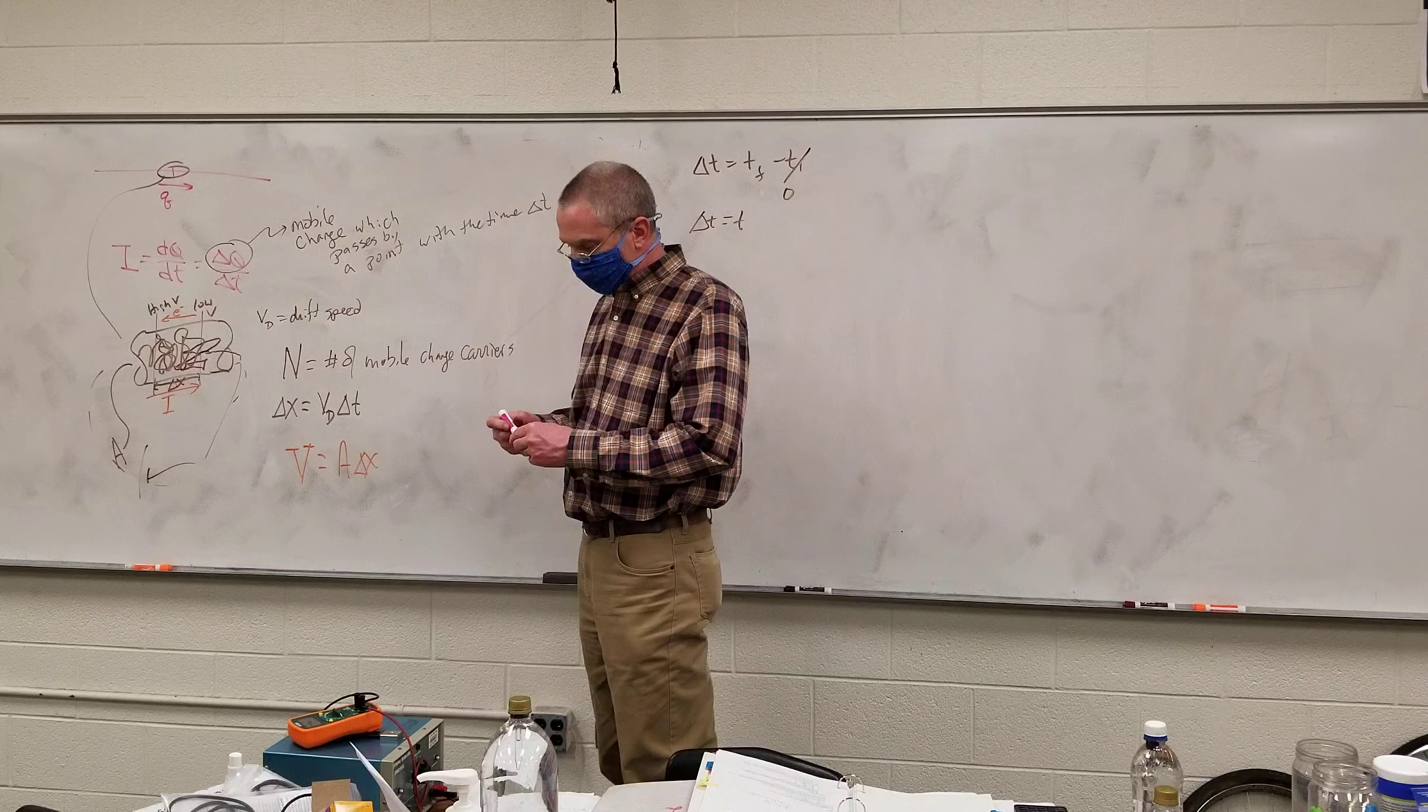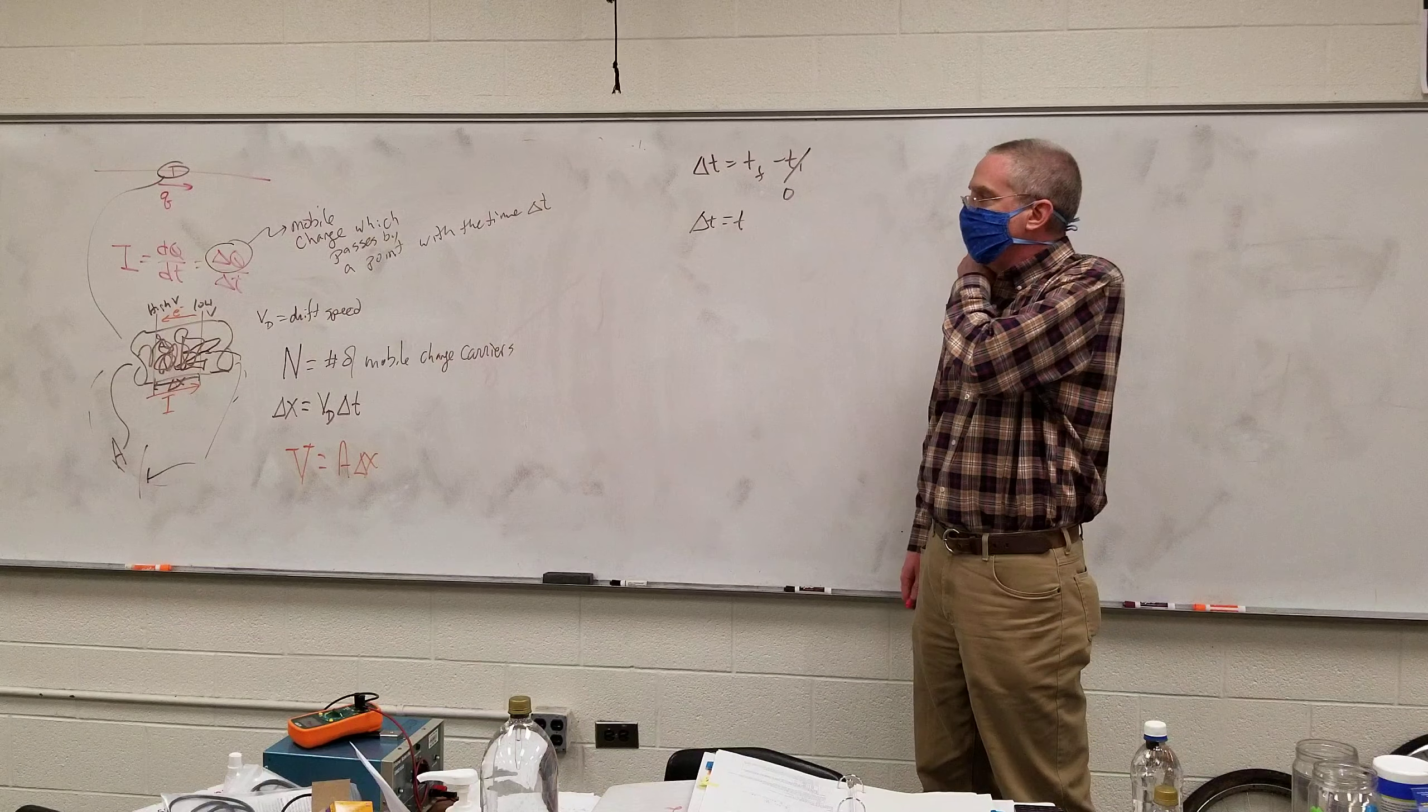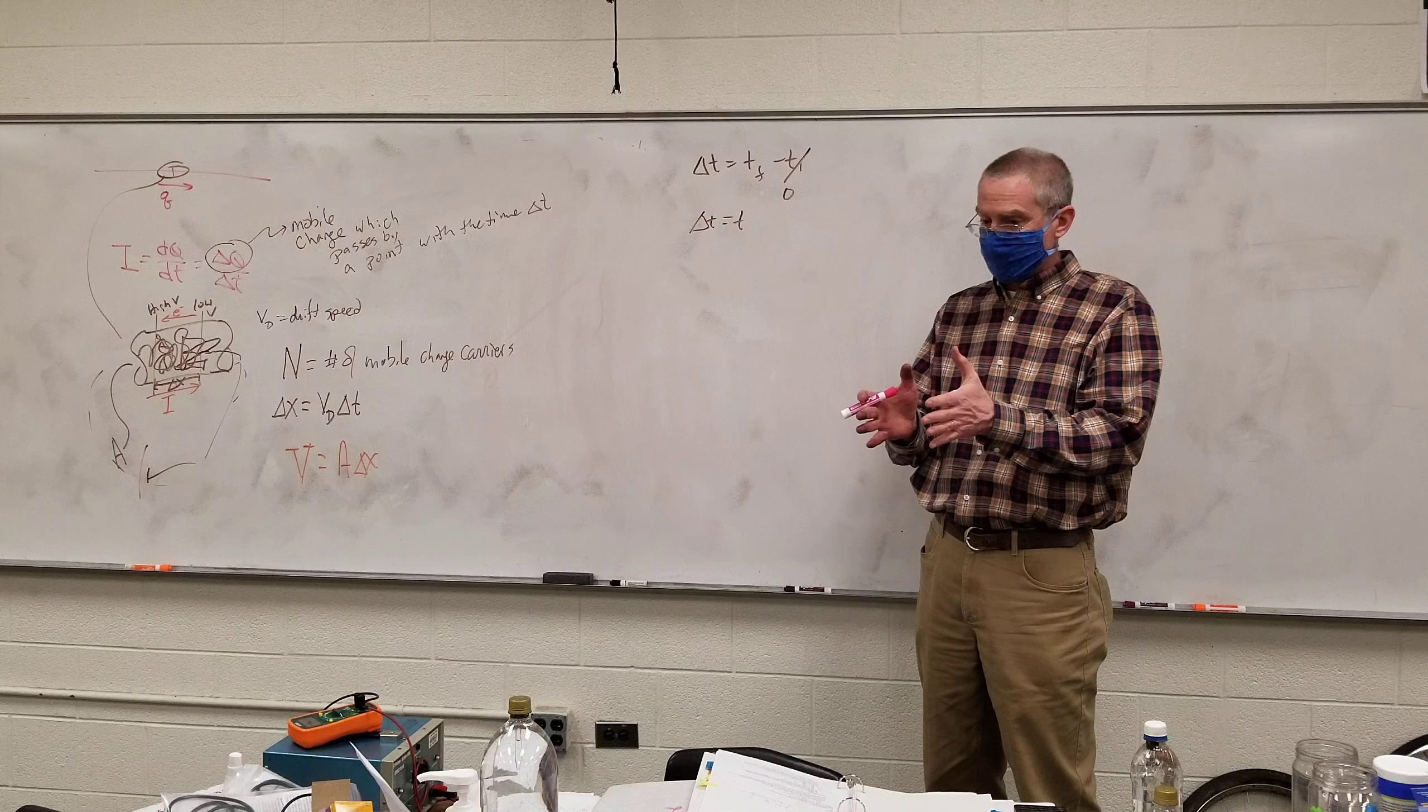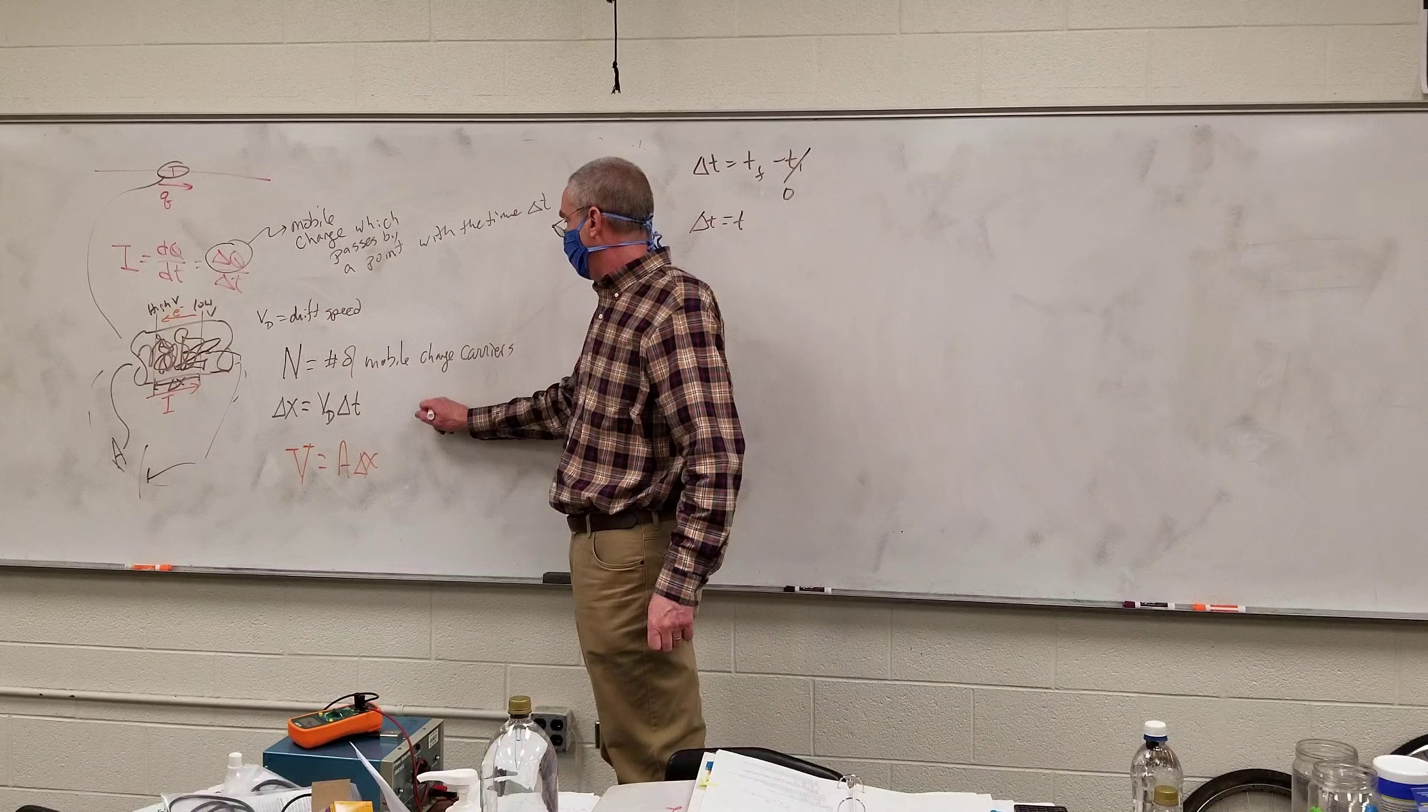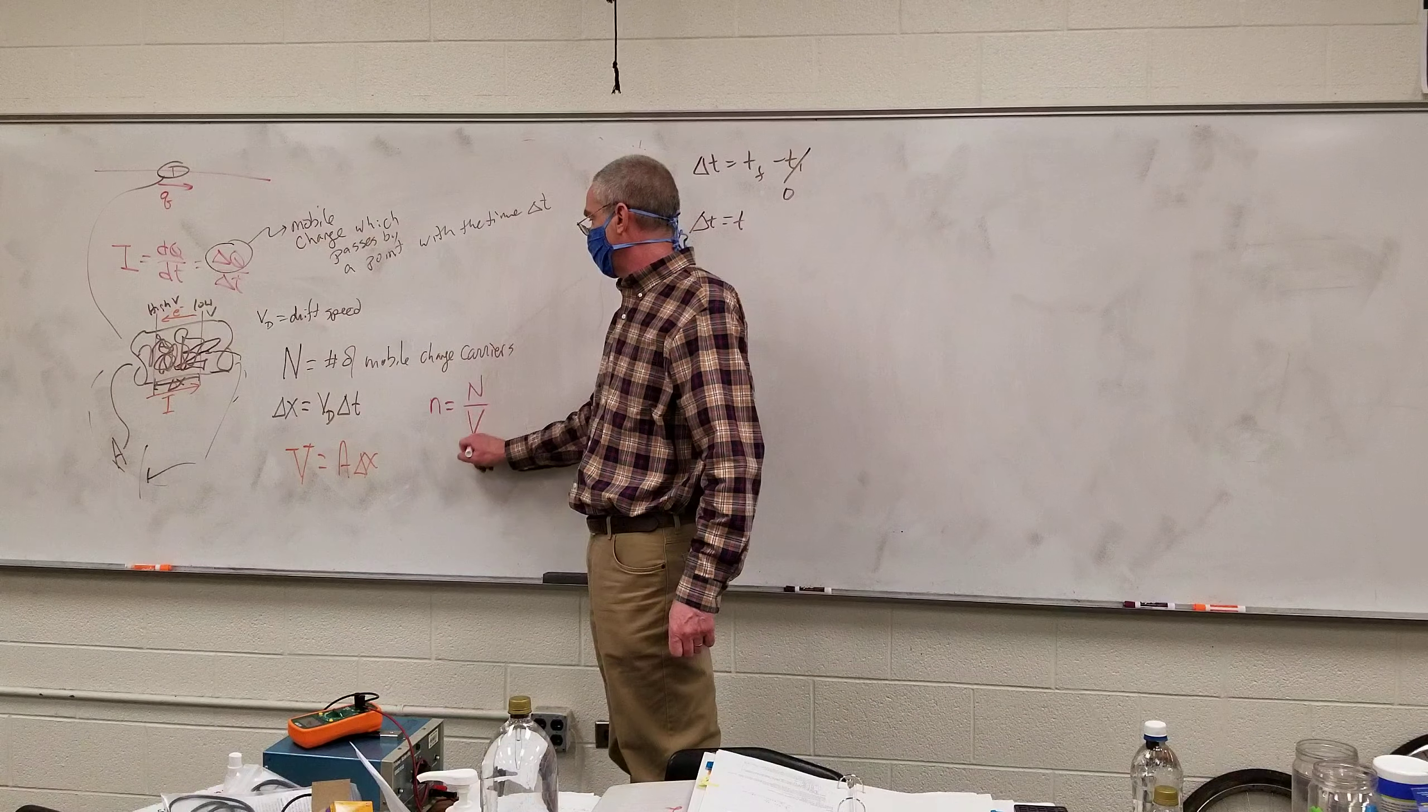Now, ultimately, the formula I'm going to go for does not want to derive it for how many charge carriers are in this volume. It's going to be looking more for the charge carrier density, because if I have a particular material, I've got a specific charge carrier density. So I'm going to find little n as just the charge carrier density, global charge carrier density, which is just the number of charge carriers per unit volume.